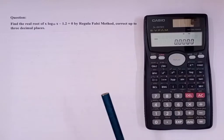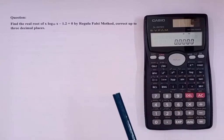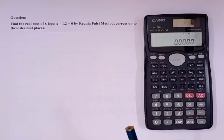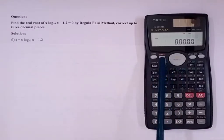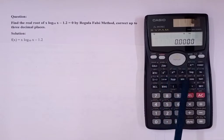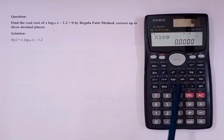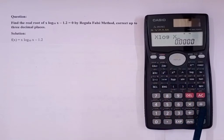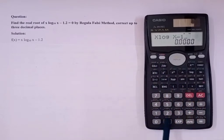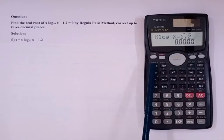Here, in the question, f(x) is x log x minus 1.2. For that, you can do it like this. Press alpha, then x log alpha x minus 1.2, then press CALC.